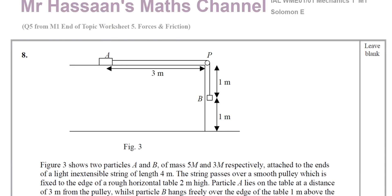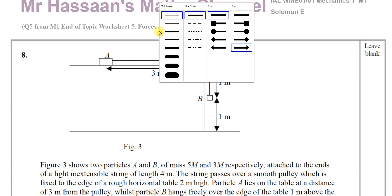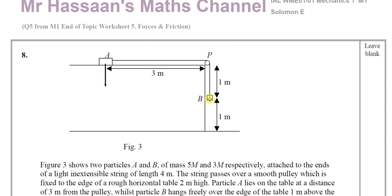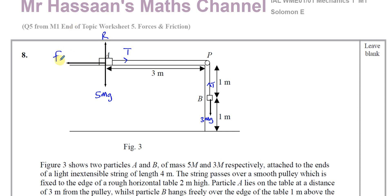Let's put all the forces acting in this diagram on these particles. The weight acts vertically downwards from both of them. For A, the mass is 5m, so its weight is 5mg. For B, its mass is 3m, so its weight is 3mg. You have the tension in the string pulling A along and holding B up. Because this is a rough plane, we consider the reaction force since A is in contact with the surface. And because it's a rough plane, you have friction which reaches its maximum value since there's going to be an acceleration. B will accelerate towards the ground, and A will have the same magnitude of acceleration towards the pulley.